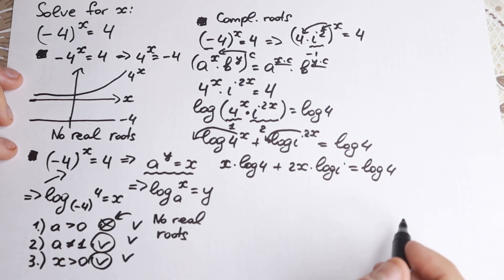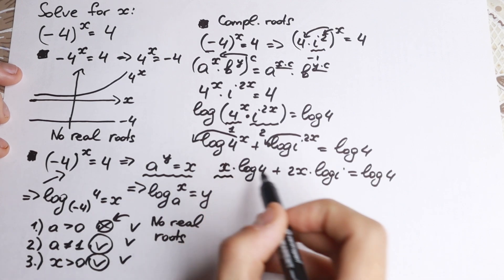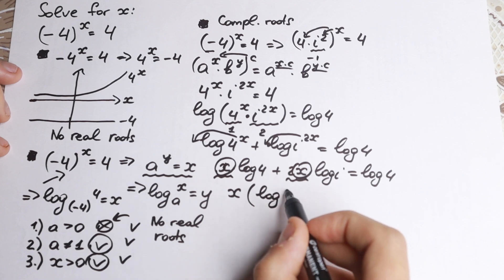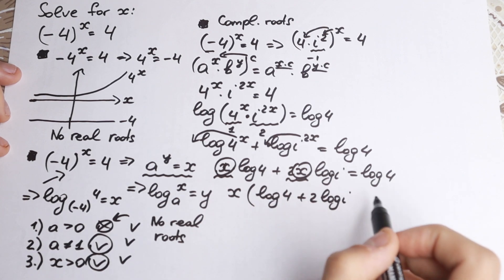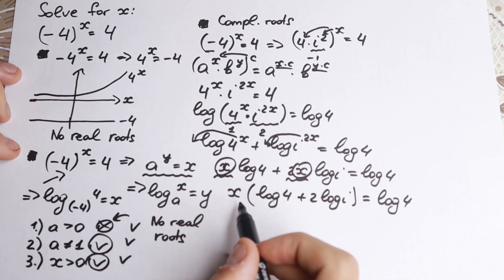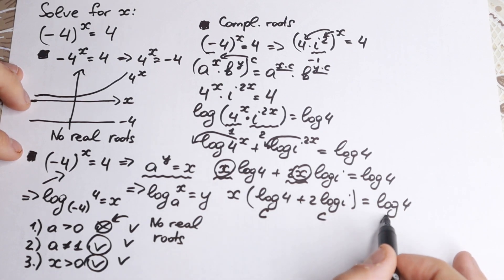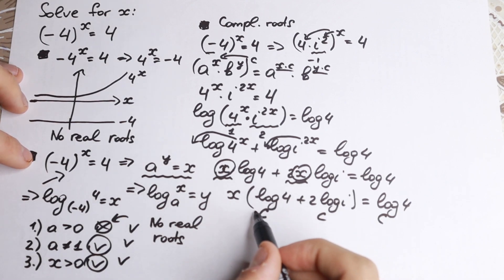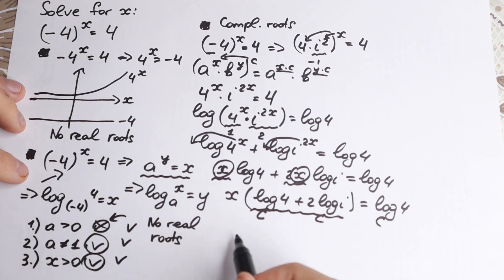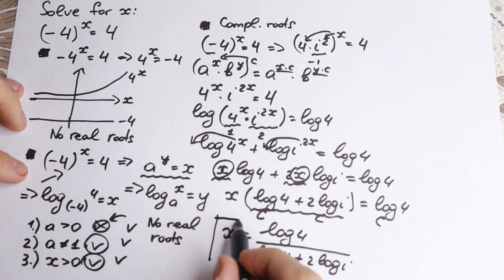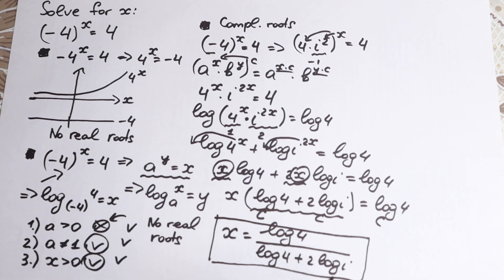Now we factor out x from the left side: x·(log 4 + 2·log i) = log 4. We have x, and we need to find it. Log 4 is a constant, and log i is a constant in the complex numbers. So we divide both sides by (log 4 + 2·log i), and as a result: x = log 4 / (log 4 + 2·log i). This is our answer — a complex root expressed with log 4 and the complex element log i.